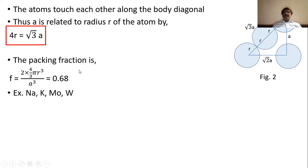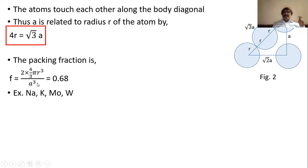The packing fraction is the ratio of volume occupied by atoms in the unit cell to the volume of the unit cell. There are 2 atoms per unit cell, each with volume (4/3)πr³, so the total atomic volume is 2 × (4/3)πr³. Since it is a cubic cell, its volume is a³. Substituting a = 4r/√3, the packing fraction is found to be equal to 0.68.